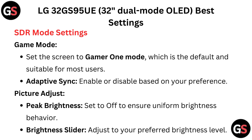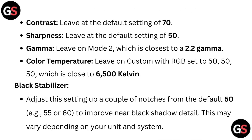Picture adjust. Peak brightness: set to off to ensure uniform brightness behavior. Brightness slider: adjust to your preferred brightness level. Contrast: leave at the default setting of 70. Sharpness: leave at the default setting of 50.